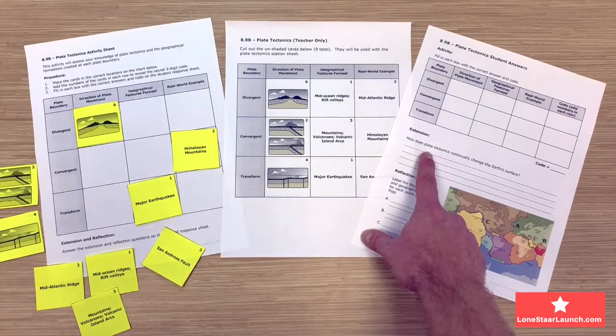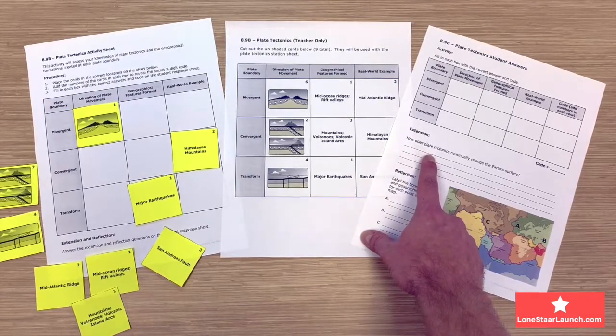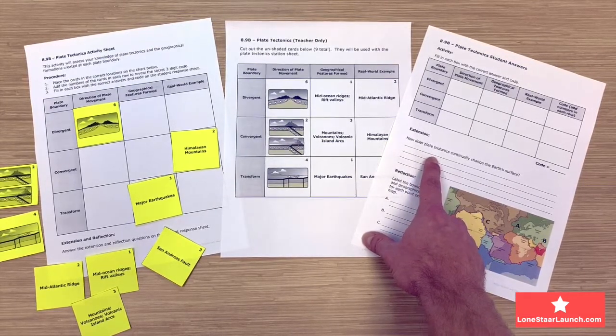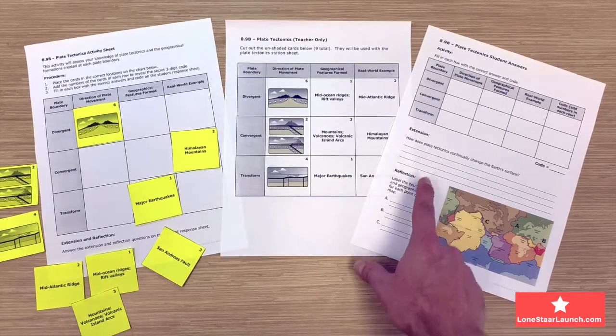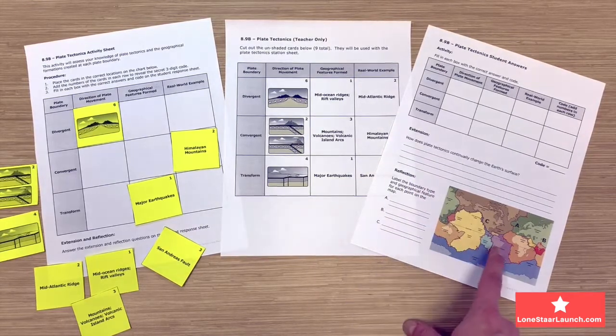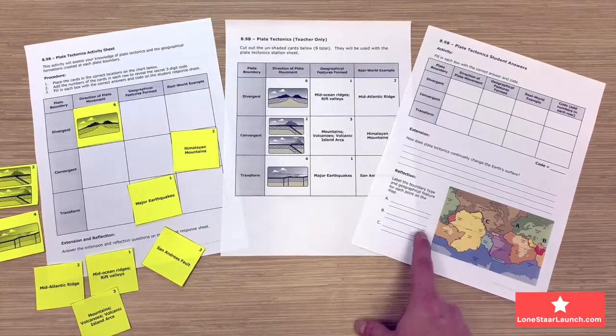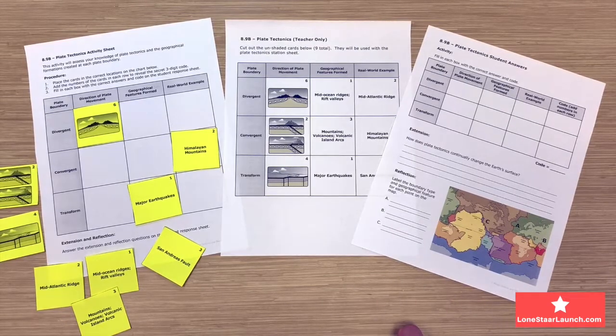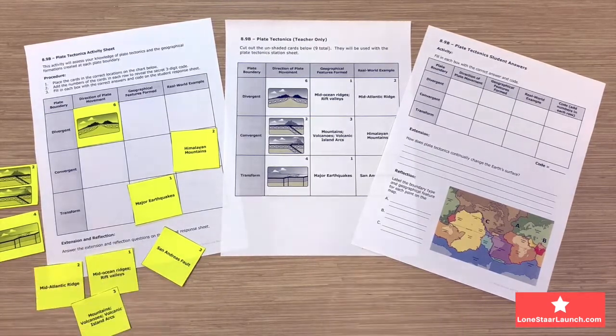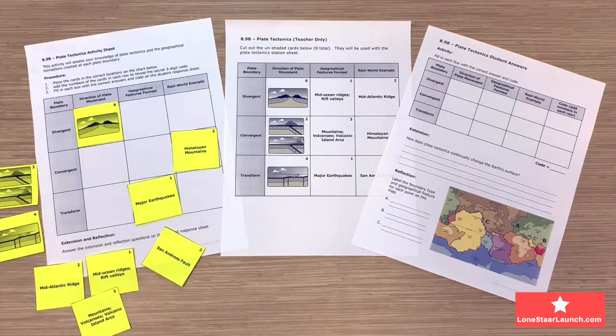Then the students are going to move on to the extension question, which is going to talk about how plate tectonics continually changes the Earth's surface. Then lastly, they're going to move on to the reflection where they're going to look at this map of Earth's tectonic plates and answer the questions, what features are formed at each point.